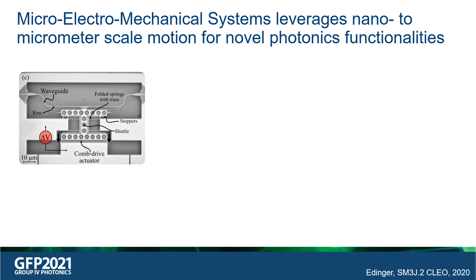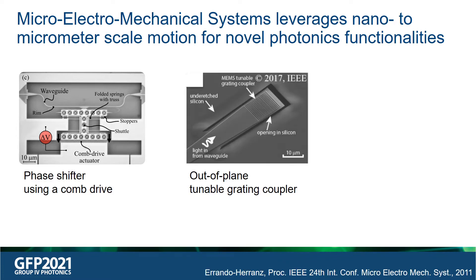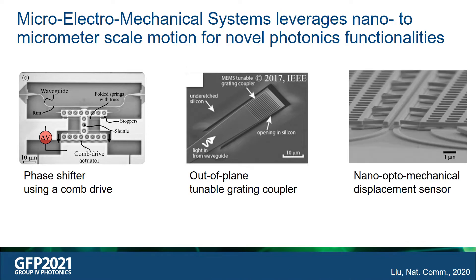In recent years, MEMS or Micro Electromechanical Systems leveraging mechanical motion in the nano to micrometer scale have enabled novel photonic functionalities. For example, take the figure shown here: it's a phase shifter which uses a low power comb drive for in-plane mechanical motion. Or a tunable grating coupler with out-of-plane motion, or for enabling novel on-chip nano optomechanical sensing functionalities.